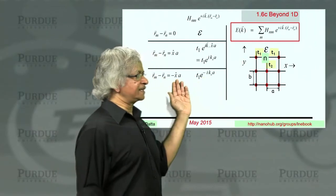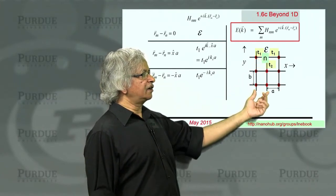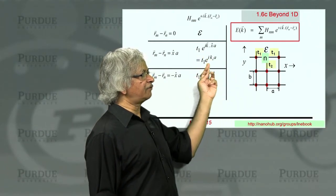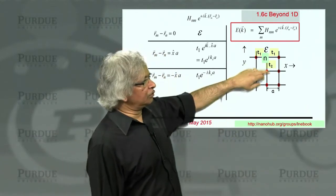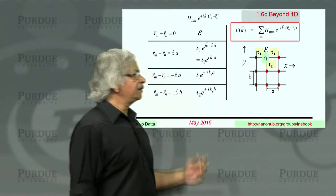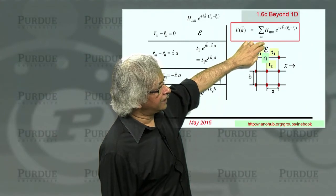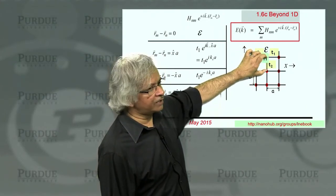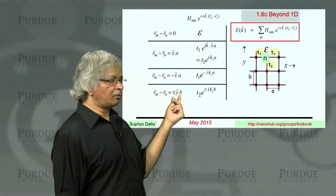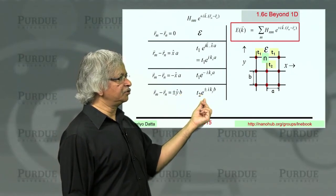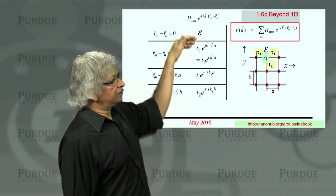So we have done two terms, one with the m right on top of n, and the other with the m sitting there. Next term is with the m sitting here. And in this case, of course, it's exactly like before, same t1, but now the vector is this one, which is still of length a, but in the negative x direction. And so instead of i kxa, you'd get minus i kxa. So that's three. Now you've got two more, one below and one above. And these would have the phase factor corresponding to this vector or that vector. And these would be vectors whose length is b, pointing in the plus y direction or the minus y direction.